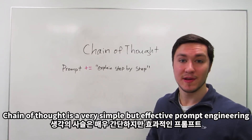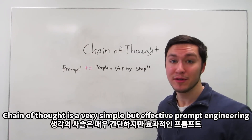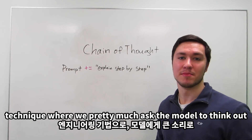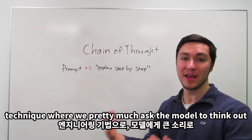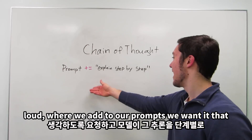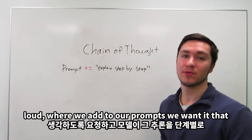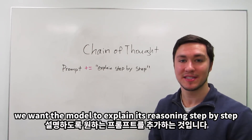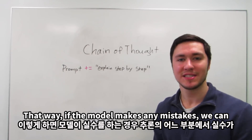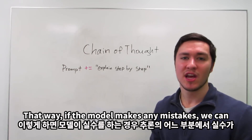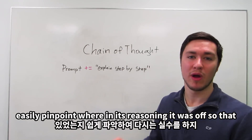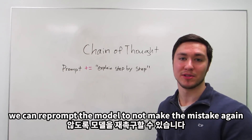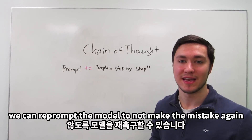Chain of thought is a very simple but effective prompt engineering technique where we pretty much ask the model to think out loud — we add to our prompt that we want the model to explain its reasoning step by step. That way, if the model makes any mistakes, we can easily pinpoint where in its reasoning it was off so that we can reprompt the model to not make the mistake again.